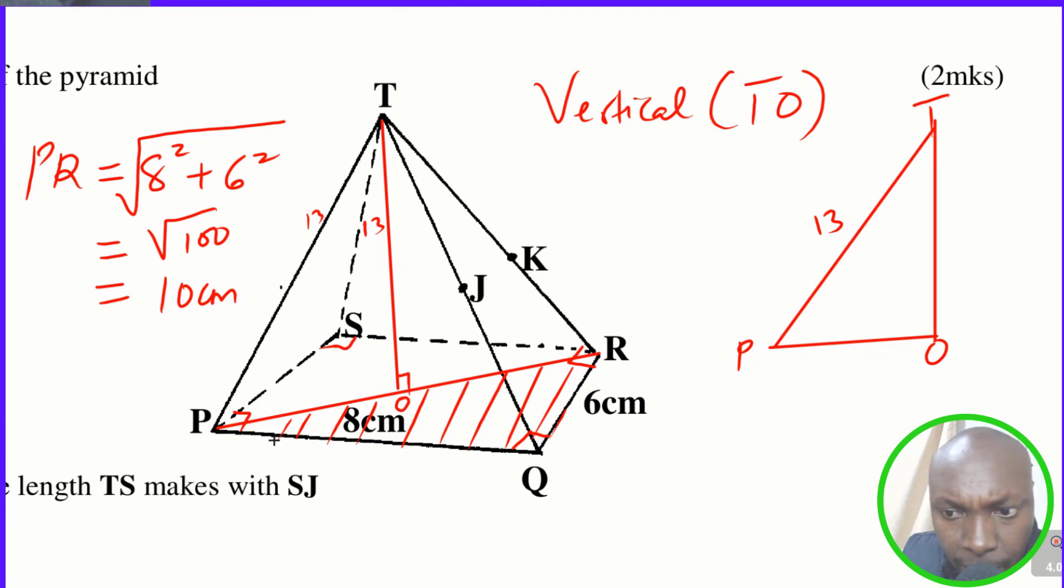Now PR is the whole diagonal. But PO will be a half of PR. So automatically, a half of PR, PR being 10, so that one will be 5 centimeters. So this will be 5 and this one will be 5. So therefore, PO equals 5.